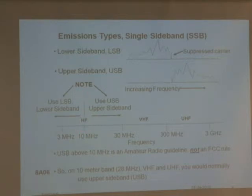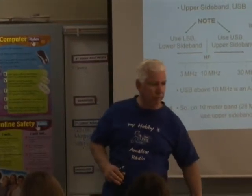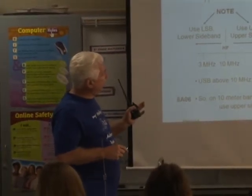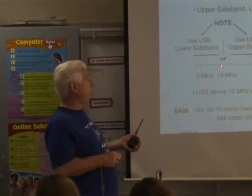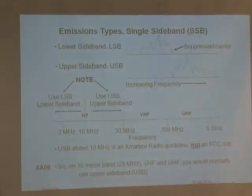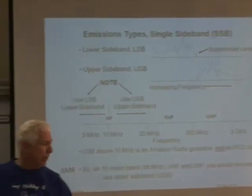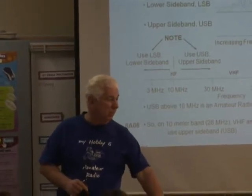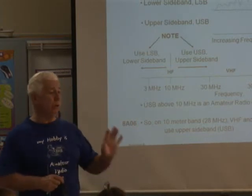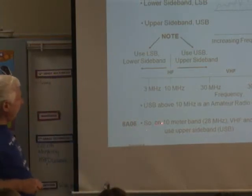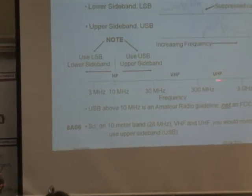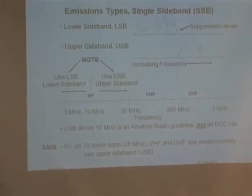At 10 megahertz, if you switch a radio to sideband mode and you're going to be on a frequency above 10 MHz, it'll automatically switch to upper sideband. If you're going to be on a frequency lower than 10 MHz, it'll switch to lower sideband. Upper sideband above 10 megahertz is an amateur radio guideline — it's not an FCC rule, it's just a convention everyone agreed on. When you buy a radio, the manufacturers understand this. So if you're on the 28 megahertz band and switch to single sideband mode, it'll automatically put you in upper sideband. On the 10-meter band at 28 megahertz, and on any of the bands above that, you would normally use upper sideband.